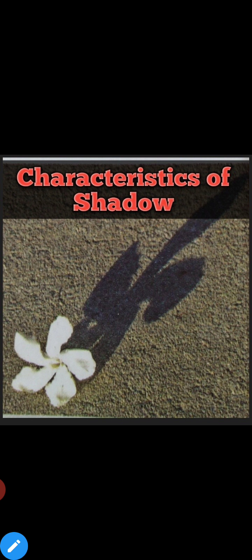क्या क्या conditions necessary हैं — first, opaque object का होना; second, source of light का होना; and third, screen या surface का होना। और क्या characteristics हैं — जो shape and size है, यह depend करता है source of light के position पे।